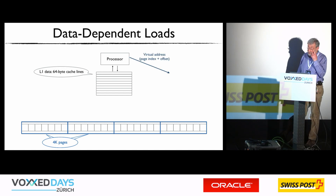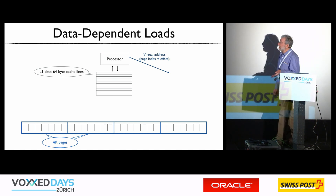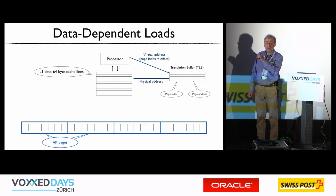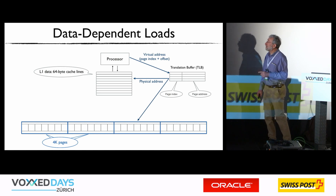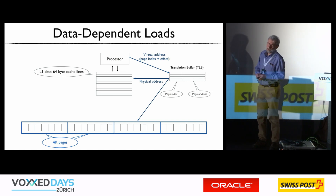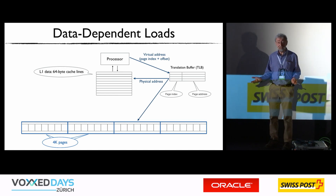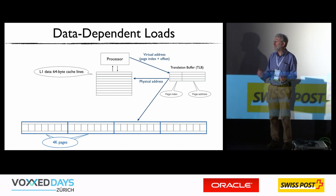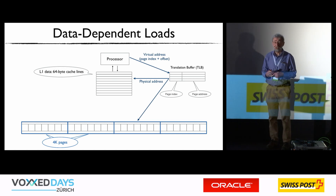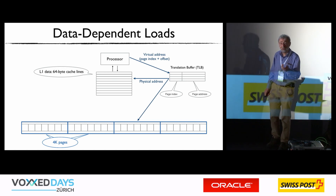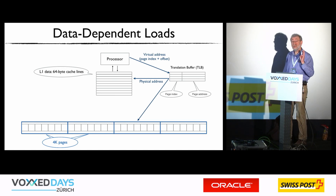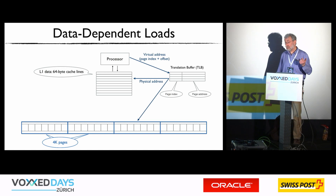The processor uses a translation look-aside buffer to translate virtual addresses into absolute addresses. This table is itself held in fast cache, but the page table as a whole has to be in memory — the bit loaded into the translation buffer is relatively small and will have to be refreshed. So it may be that for every memory access in the case of data-dependent loads, which are jumping between pages, you're going to have to refresh the caches not once but twice. This is very expensive.